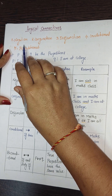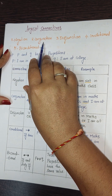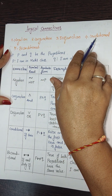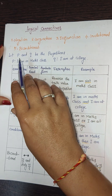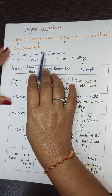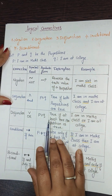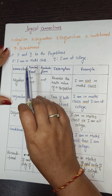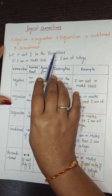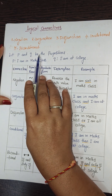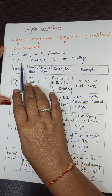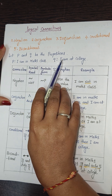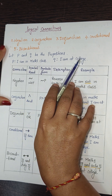We'll use two propositions p and q, where p is 'I am in a maths class' and q is 'I am at a college,' to explain each logical connective in detail.